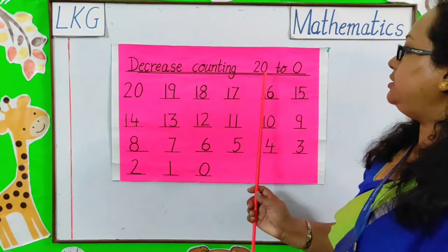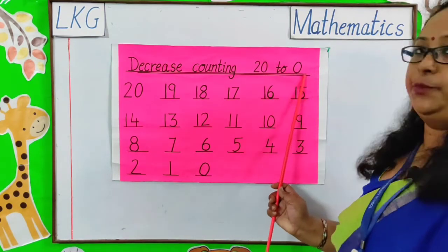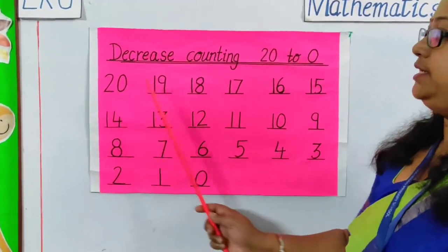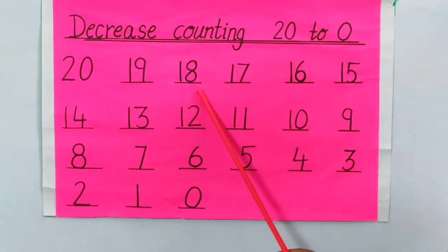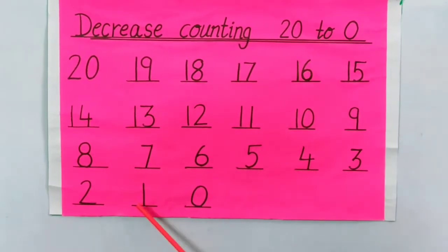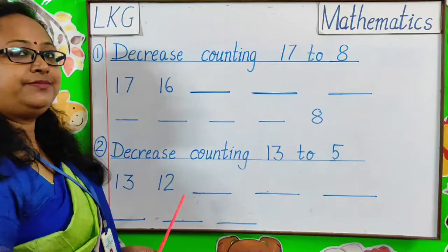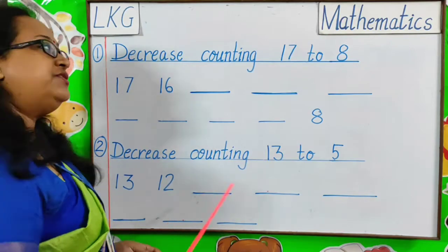Decrease Counting 20-0: 20, 19, 18, 17, 16, 15, 14, 13, 12, 11, 10, 9, 8, 7, 6, 5, 4, 3, 2, 1, 0. Let us begin our first exercise.